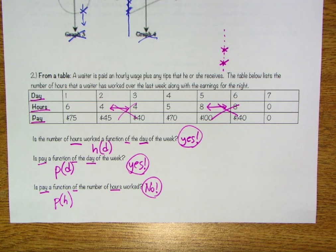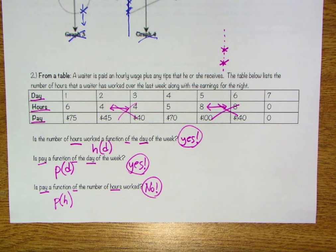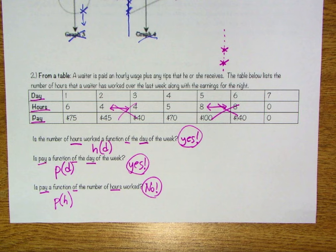For some number of hours, you can earn different amounts of pay. Why? Because a waiter is paid an hourly wage plus any tips he or she receives. Tips are variable — the hourly wage wouldn't be, but tips certainly would be. Hopefully that sums things up. If you have any questions, please feel free to message or email, and you can now continue to your homework. Good luck!